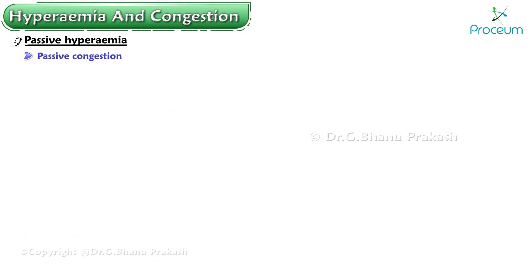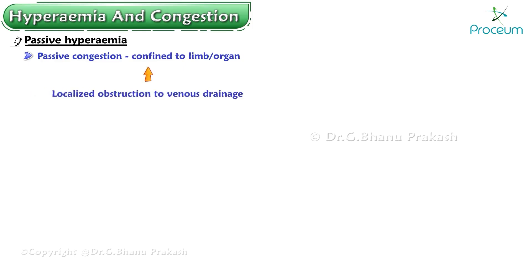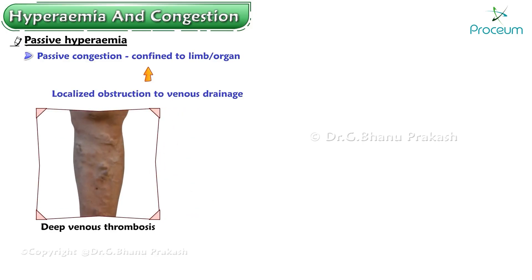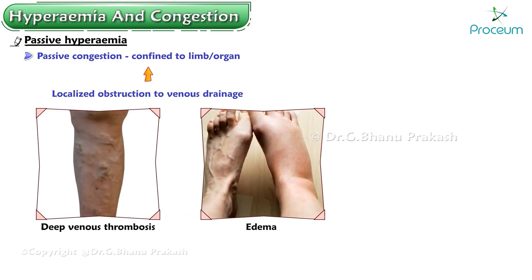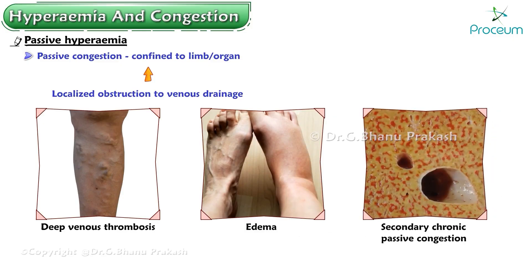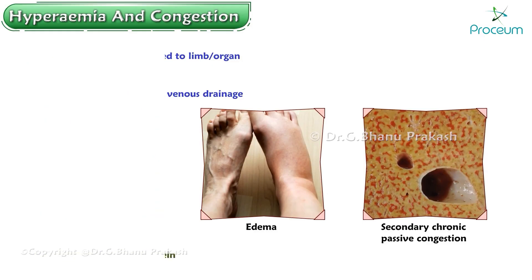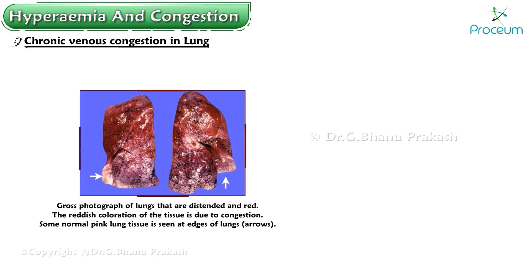Passive congestion may also be confined to a limb or organ as a result of more localized obstruction to venous drainage. Examples include deep venous thrombosis of the leg veins with resulting edema of the lower extremity, secondary chronic passive congestion of the liver, and thrombosis of hepatic veins.